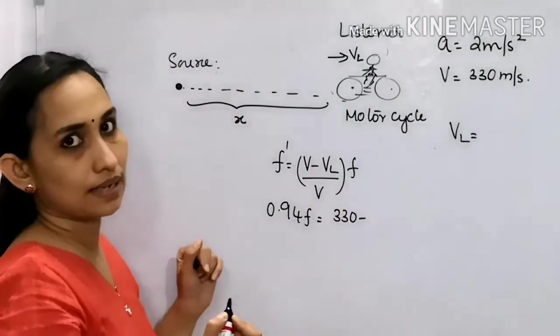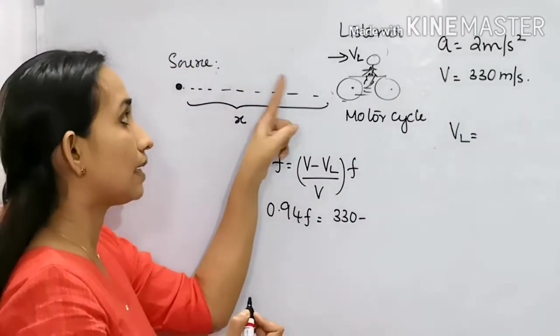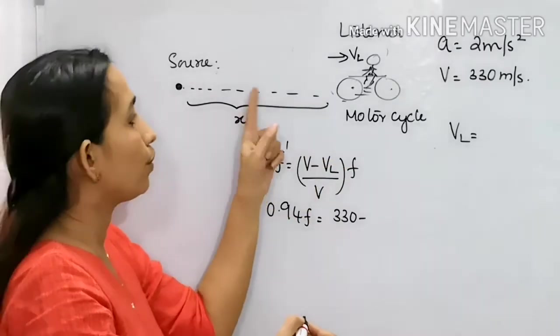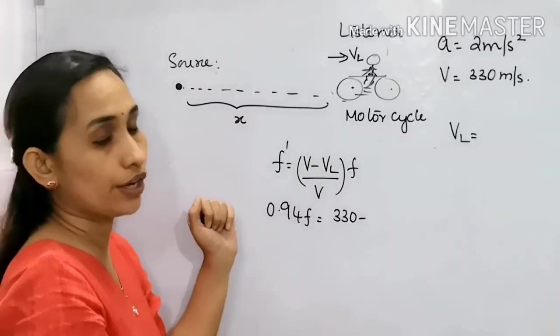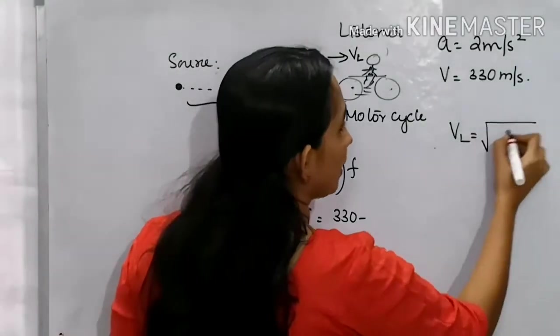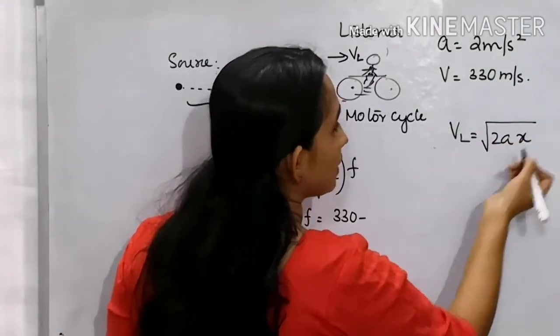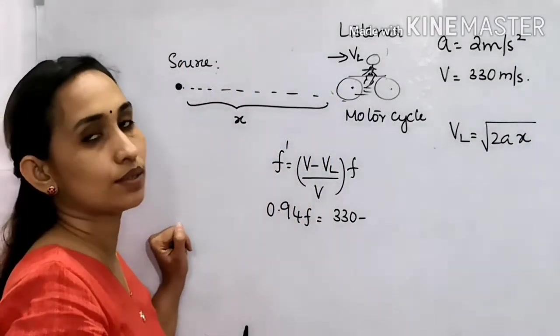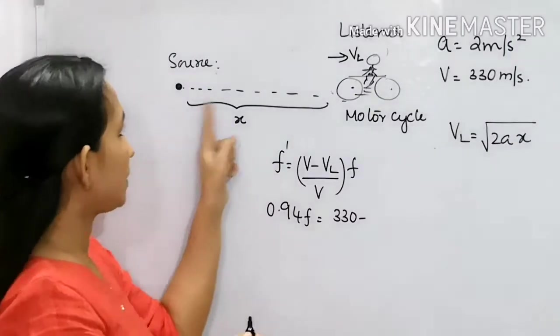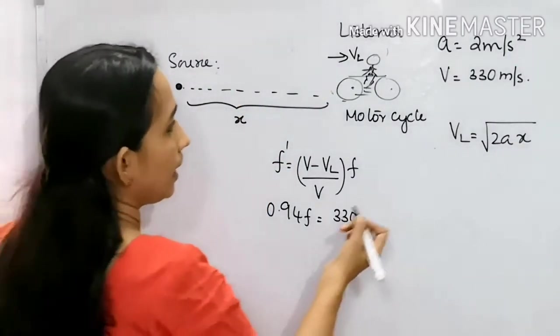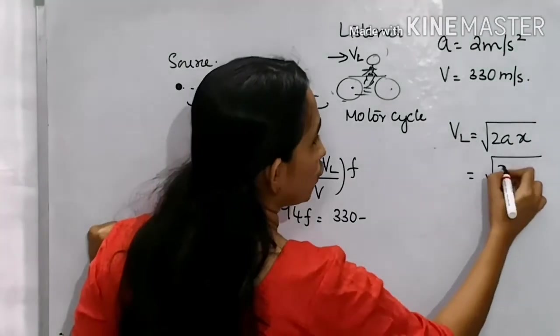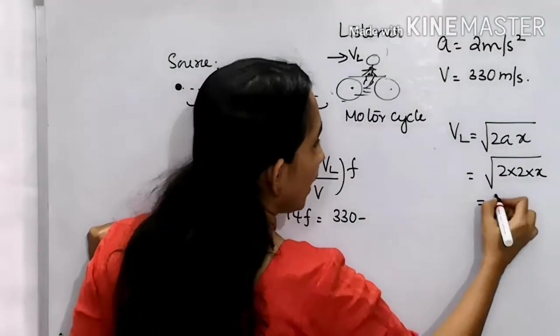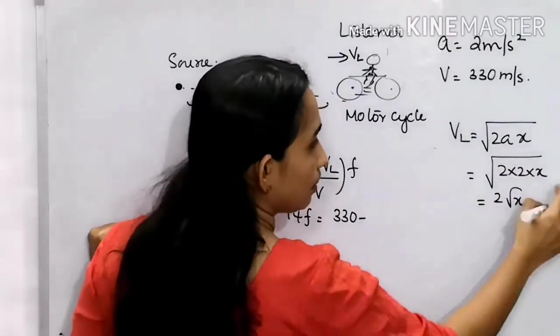Starts moving with an acceleration. x-distance, how much distance? This can be written as root of 2ax, by substituting the equation, v squared minus u squared equal to 2ax. Now, I will substitute root of 2 into 2 into x which is equal to 2 root x. Root of 4x is equal to 2 root x.